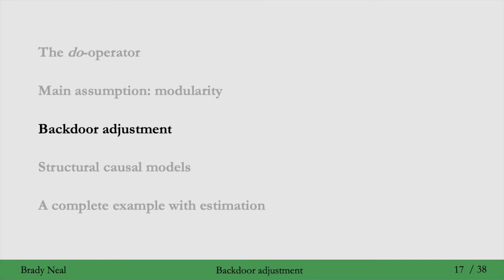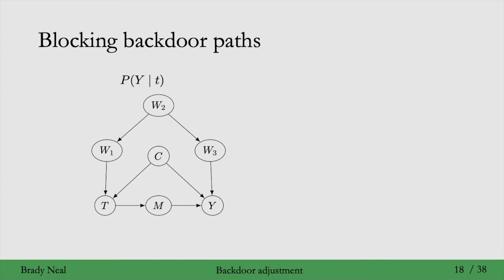That wraps up the modularity assumption. We started with the modularity assumption, which gave us the truncated factorization, which then gave us this nice little identification. In this section, on the backdoor adjustment, we're going to generalize that identification process to more than just that simple graph.